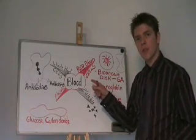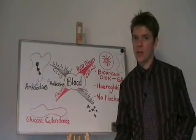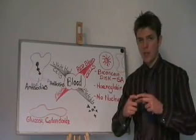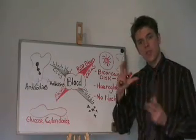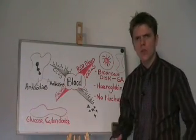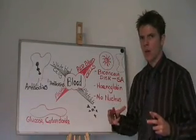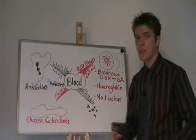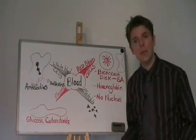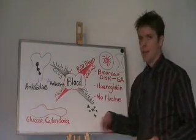First of all, we have red blood cells. Red blood cells are not strictly cells because they don't have their own nucleus. They have a biconcave disc shape — a disc shape with a dent on both sides, which gives them two concaves. This is to increase their surface area so they can pack as much oxygen onto them as possible. The fact that they don't have a nucleus also increases the surface area for absorption of oxygen. They carry a protein called haemoglobin, which picks up oxygen.